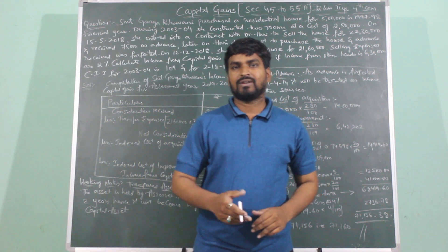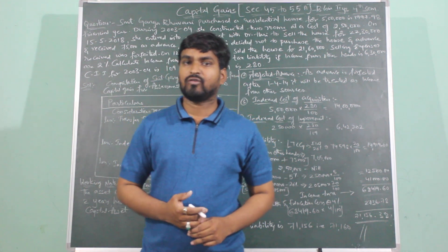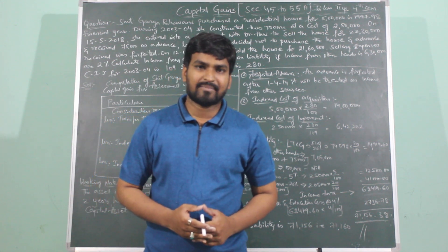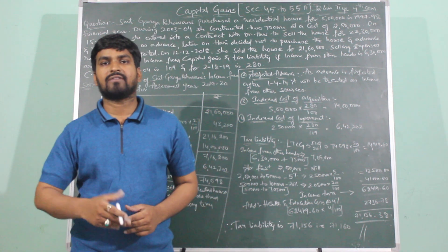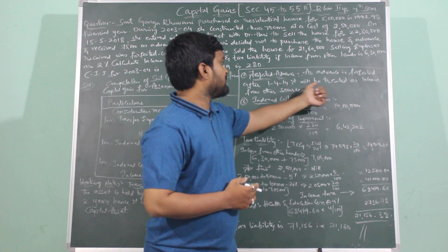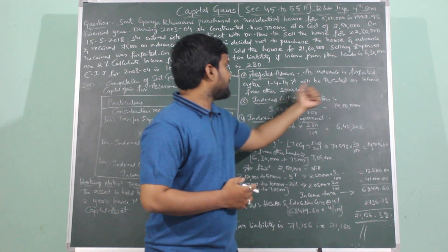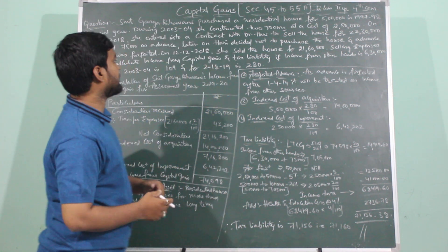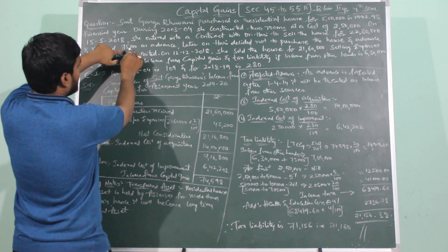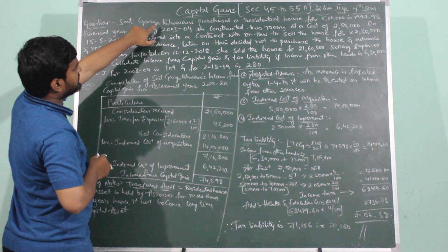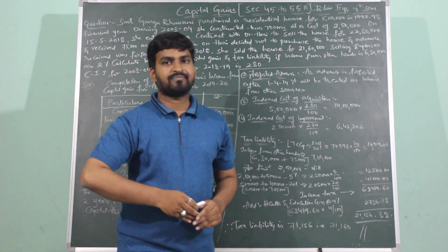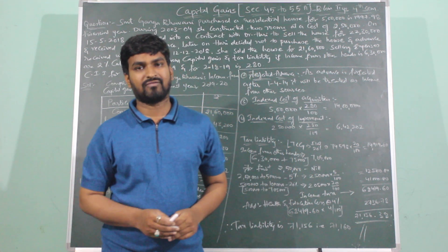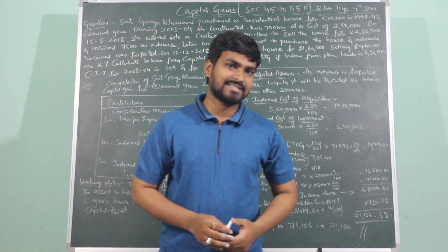Regarding the forfeited advance: in previous problems the advance was forfeited before 1st April 2014, in which case it was subtracted from the cost of acquisition. But here the advance is being forfeited after 1st April 2014, so it will be treated as income from other sources for the assessee. This Rs. 75,000 forfeited advance will be treated as income from other sources for Ganga Bhavani. If the advance had been forfeited before 1st April 2014, it would have been subtracted from the cost of acquisition.